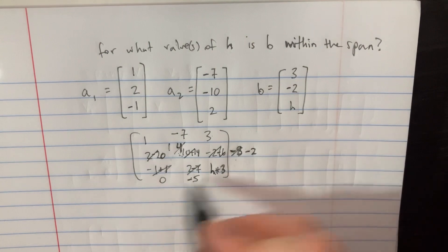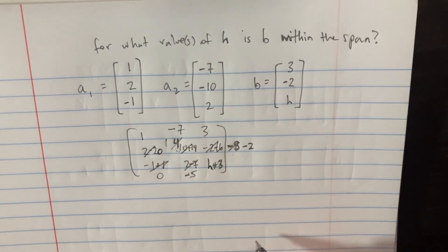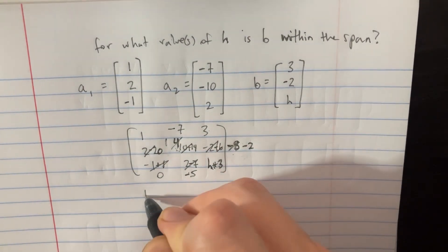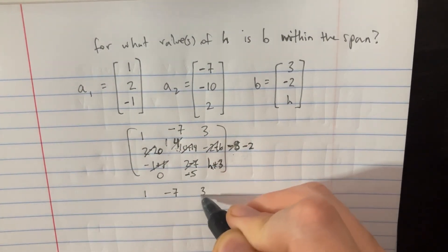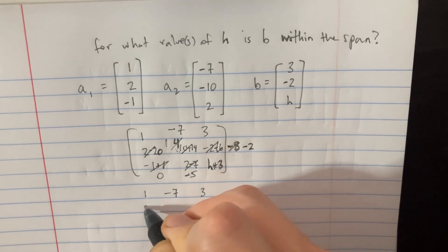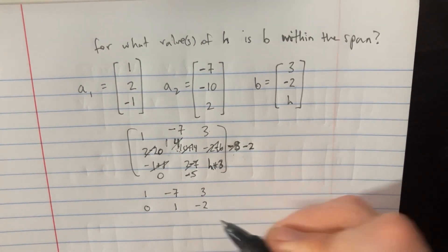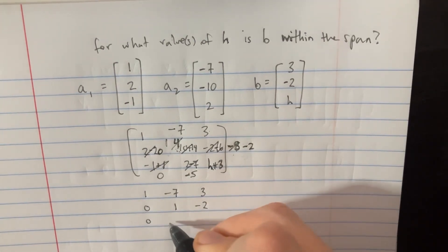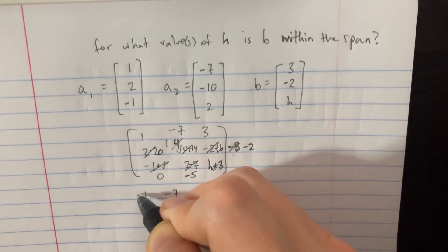Let's just rewrite this one more time so it's not so sloppy. We have the matrix: 1, negative 7, 3 | 0, 1, negative 2 | 0, negative 5, and h plus 3.